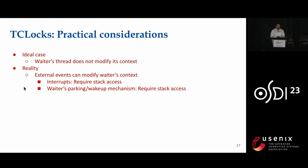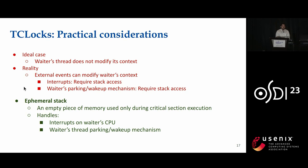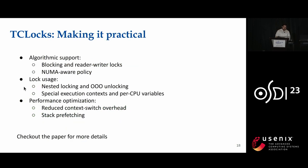This algorithm works well in the ideal case because waiter threads are not modifying their context. However, in reality there are external events like interrupts and waiter parking and wake-up mechanisms which can modify the waiter's context. To solve this problem, we provide an ephemeral stack — essentially an empty piece of memory used only during critical section execution — used by the waiter thread's parking and wake-up mechanism and also by interrupts. Additionally, we have implemented a blocking and reader-writer lock with a NUMA-aware policy, support for modern lock usage patterns including nested locking and out-of-order unlocking, special execution context handling in the Linux kernel, and performance optimizations including reduced context-switch overhead and prefetching of the stack.